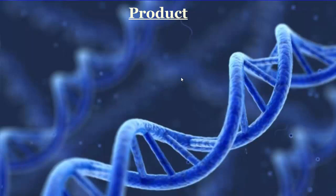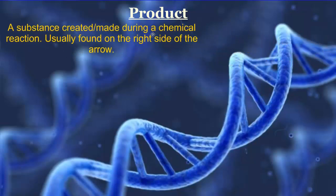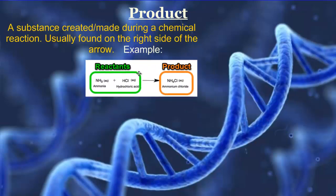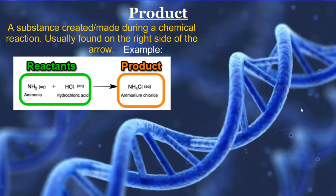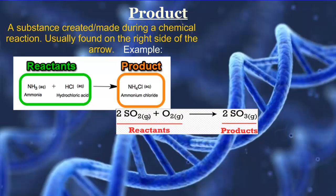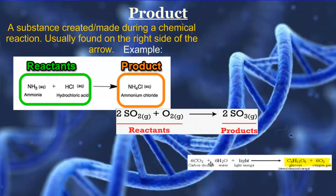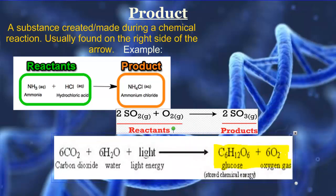The last term is product. A product is the substance that is created or made during a chemical reaction. The reactants react together to create a new product, which is usually found on the right side of the arrow. For example, ammonia and hydrochloric acid give us ammonium chloride as the new product. In the photosynthesis reaction, carbon dioxide and water are our reactants giving us new products: glucose and oxygen.